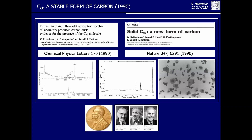Smalley would probably never have gotten the Nobel Prize without Krätschmer. Because in 1990, Krätschmer and Huffman published papers showing that C60 also exists under different conditions: Smalley's apparatus was producing tiny amounts of clusters, while Krätschmer and Huffman with their method — now called Krätschmer-Huffman — could produce relatively large amounts of C60, which was the way to the Nobel Prize. But when the Nobel committee in 1996 wanted to award the prize, there was no question it would go to Curl, Kroto, and Smalley. Krätschmer and Huffman — four people is too much; the Nobel Prize can only go to three.